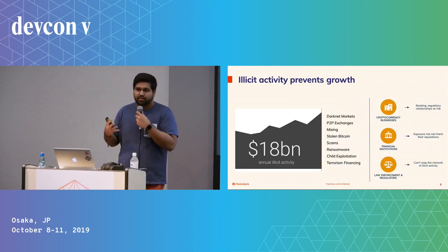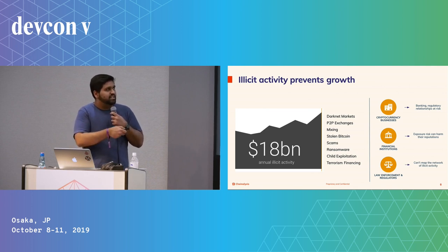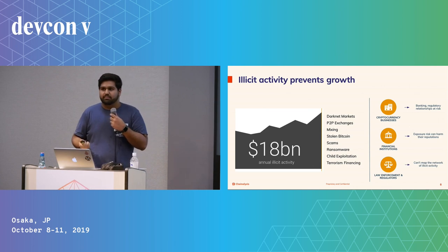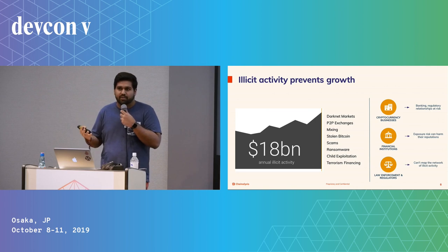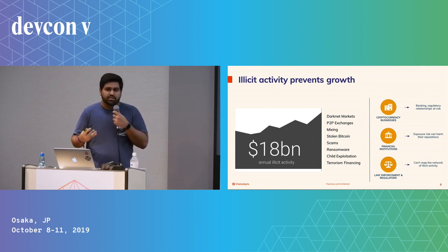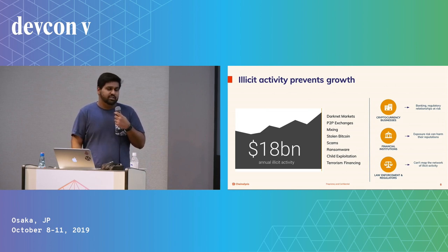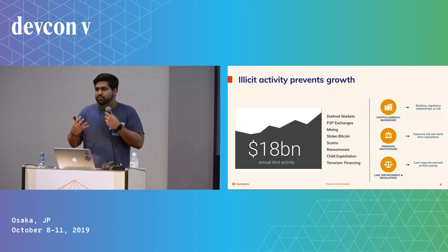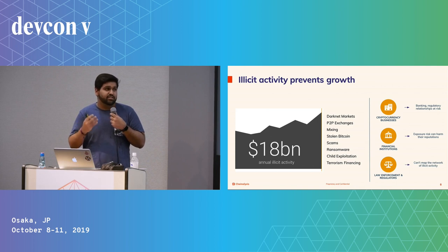Overall, illicit activity prevents growth for all ecosystem participants. Each actor in the ecosystem has their own risks and needs. Cryptocurrency businesses struggle to get bank accounts without information on where funds come from. Financial institutions harm their reputations and face legal repercussions if exposed too much to risk. And law enforcement won't be comfortable with technology growing if they can't enforce their regulations on it. Our goal is to work with each ecosystem participant and give them value that lets them feel more comfortable with cryptocurrencies.